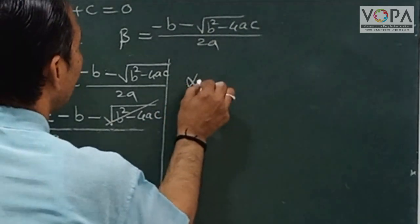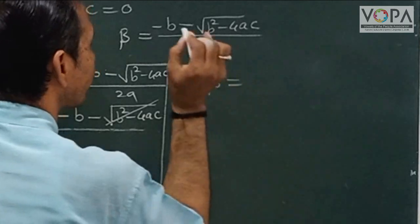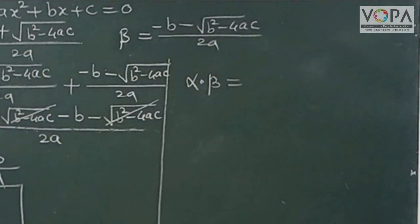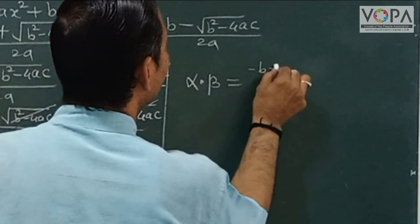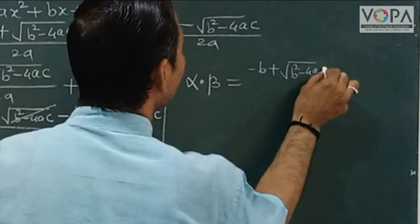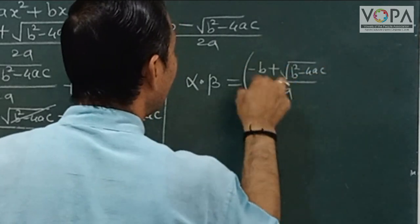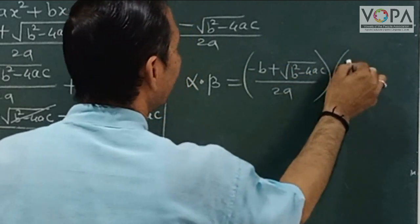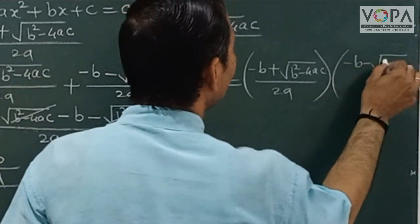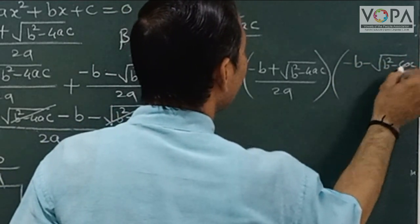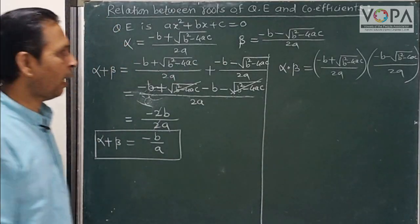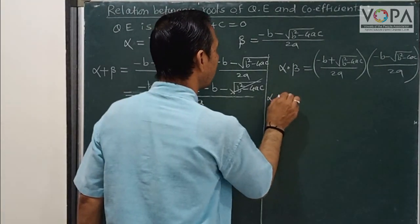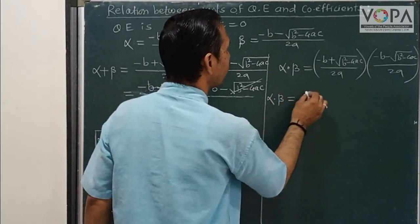Second thing: let's multiply alpha into beta. The product of these roots: (-b + √(b²-4ac))/2a in one bracket, times (-b - √(b²-4ac))/2a in the second bracket. How do we calculate this product? α × β equals...